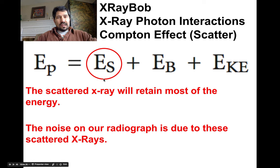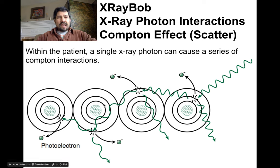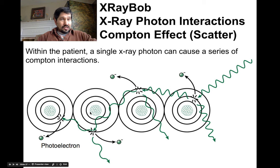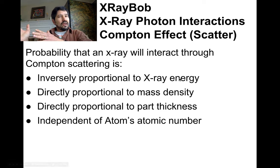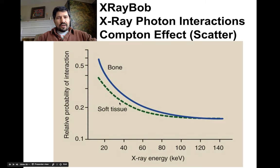The scattered electron actually has most of the energy, and all of those scattered electrons just set up as noise on our radiograph because they're randomly scattered — not straight up from where the bone or soft tissue was. Multiple Compton scatters can occur, and then we might end up with a photoelectric effect at the end. A single x-ray photon can cause several scatters and eject several electrons. The probability of this occurring is inversely proportional to the energy of the x-ray. Here we see bone and soft tissue have separate curves because they have different densities, but not because of atomic number.